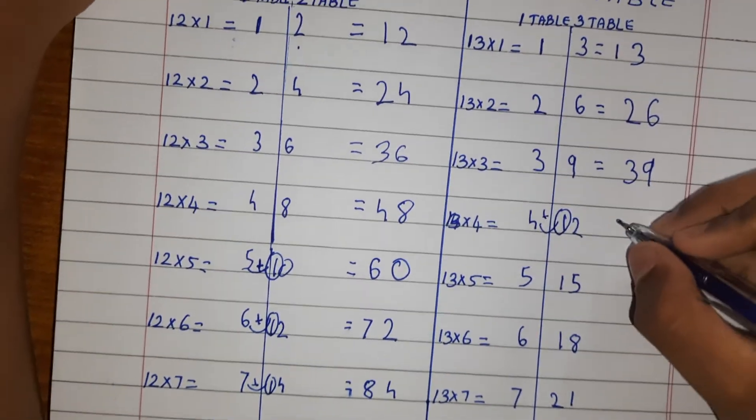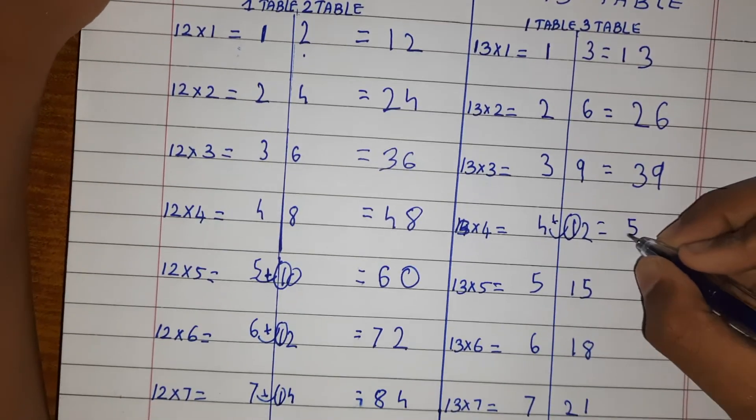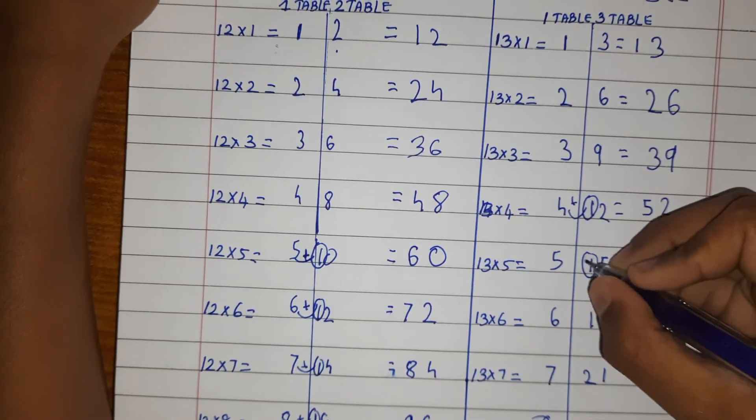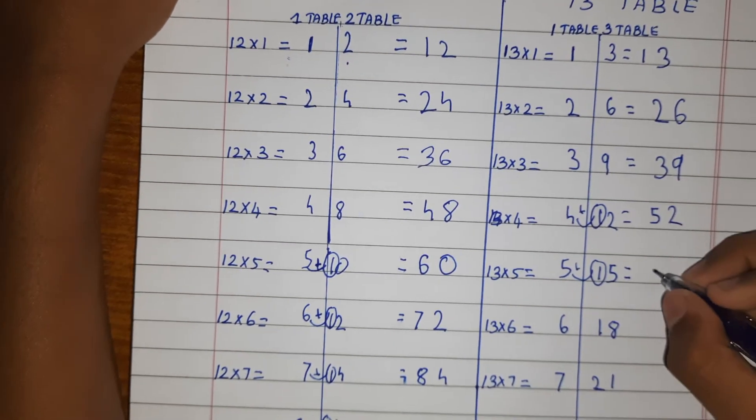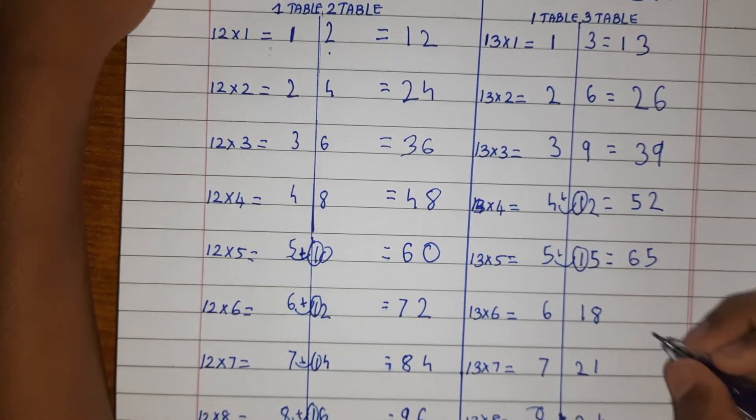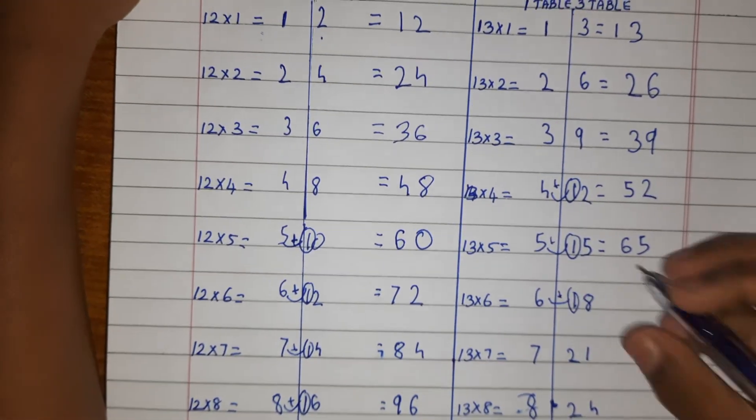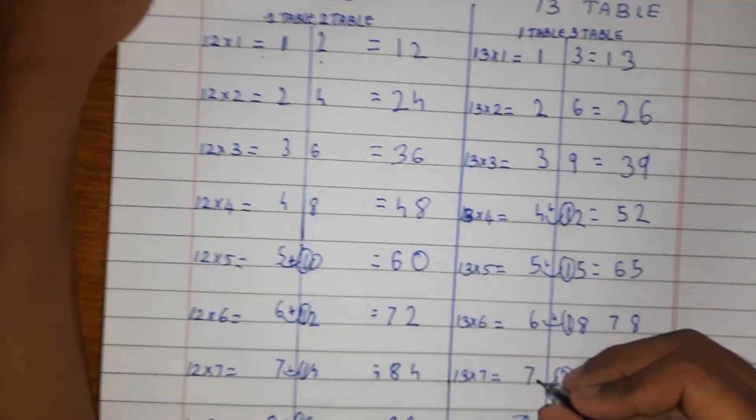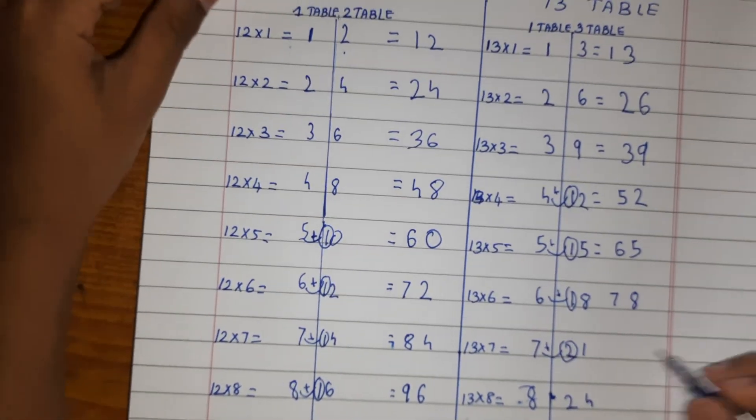Now let's add: 13, then 26, then 39, then 52.